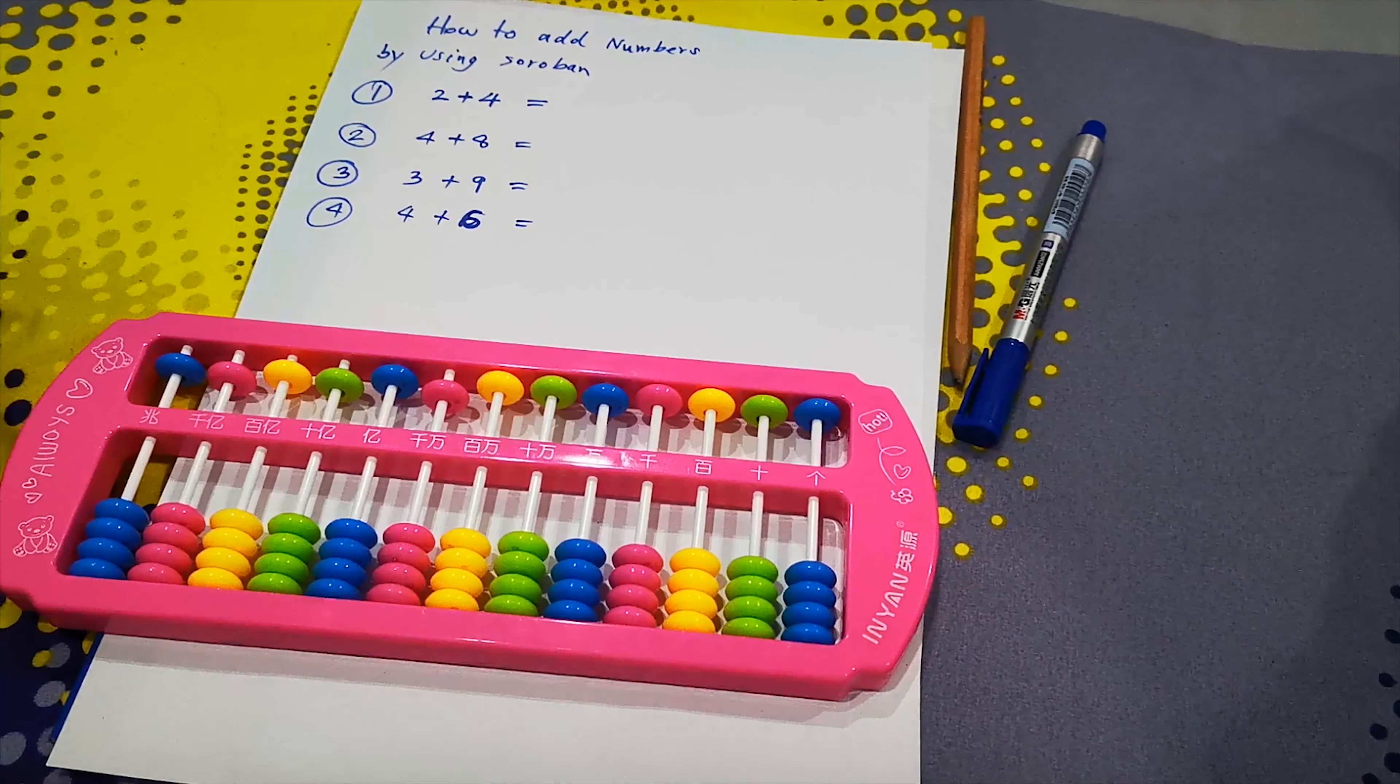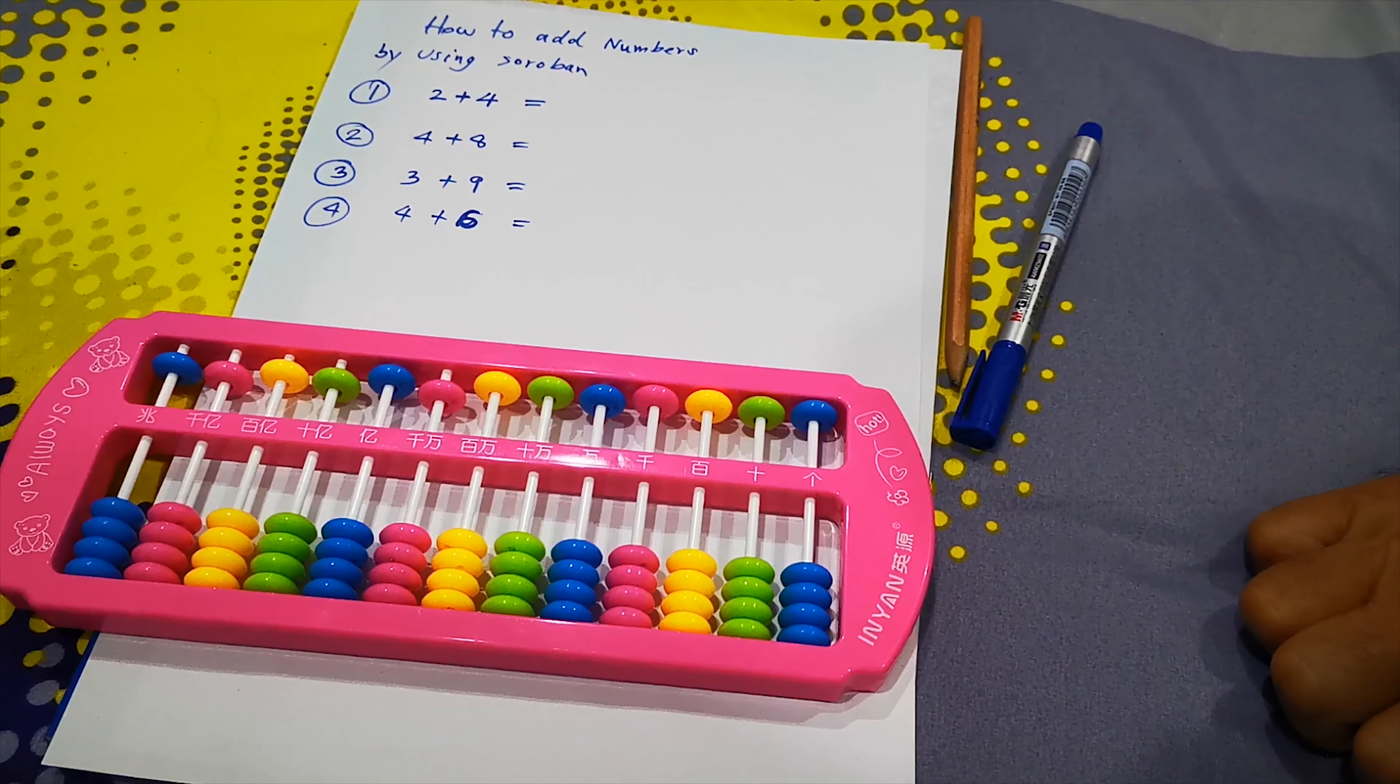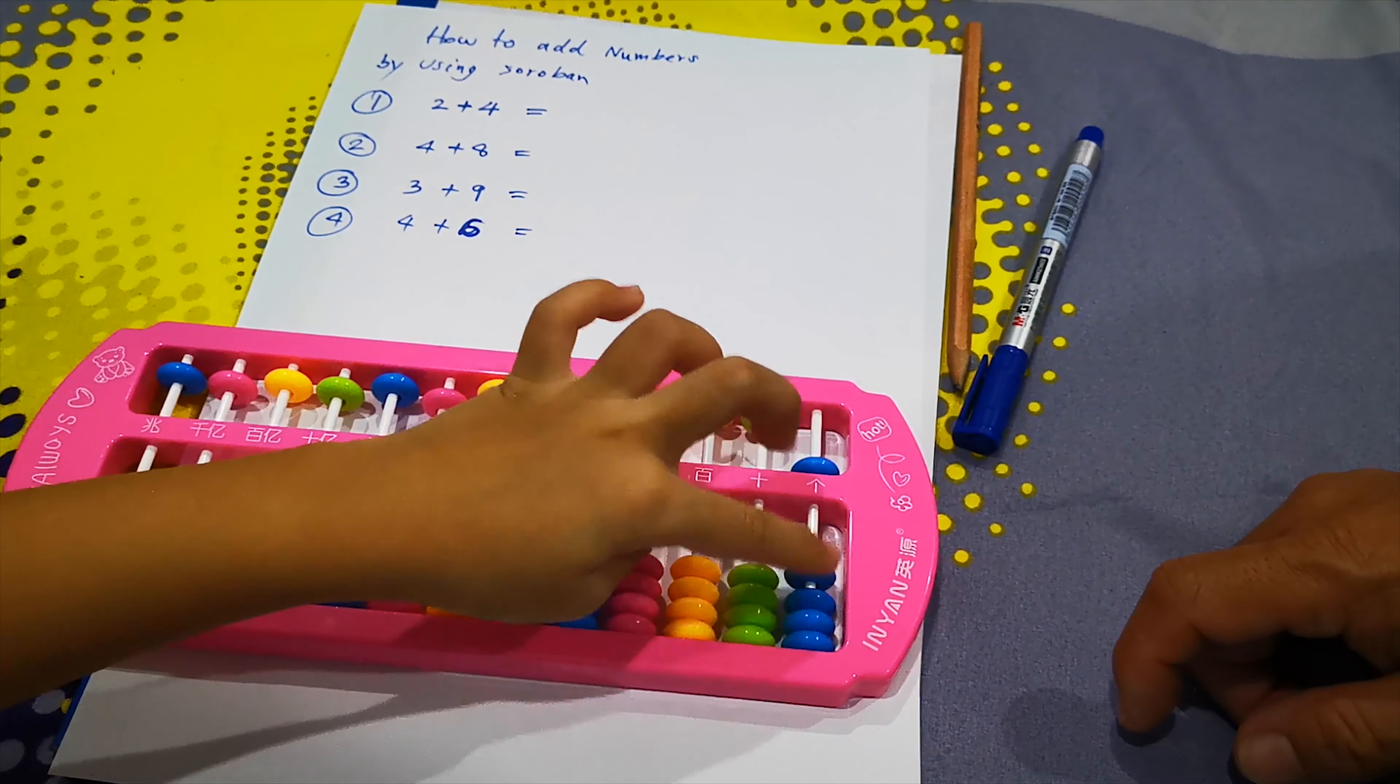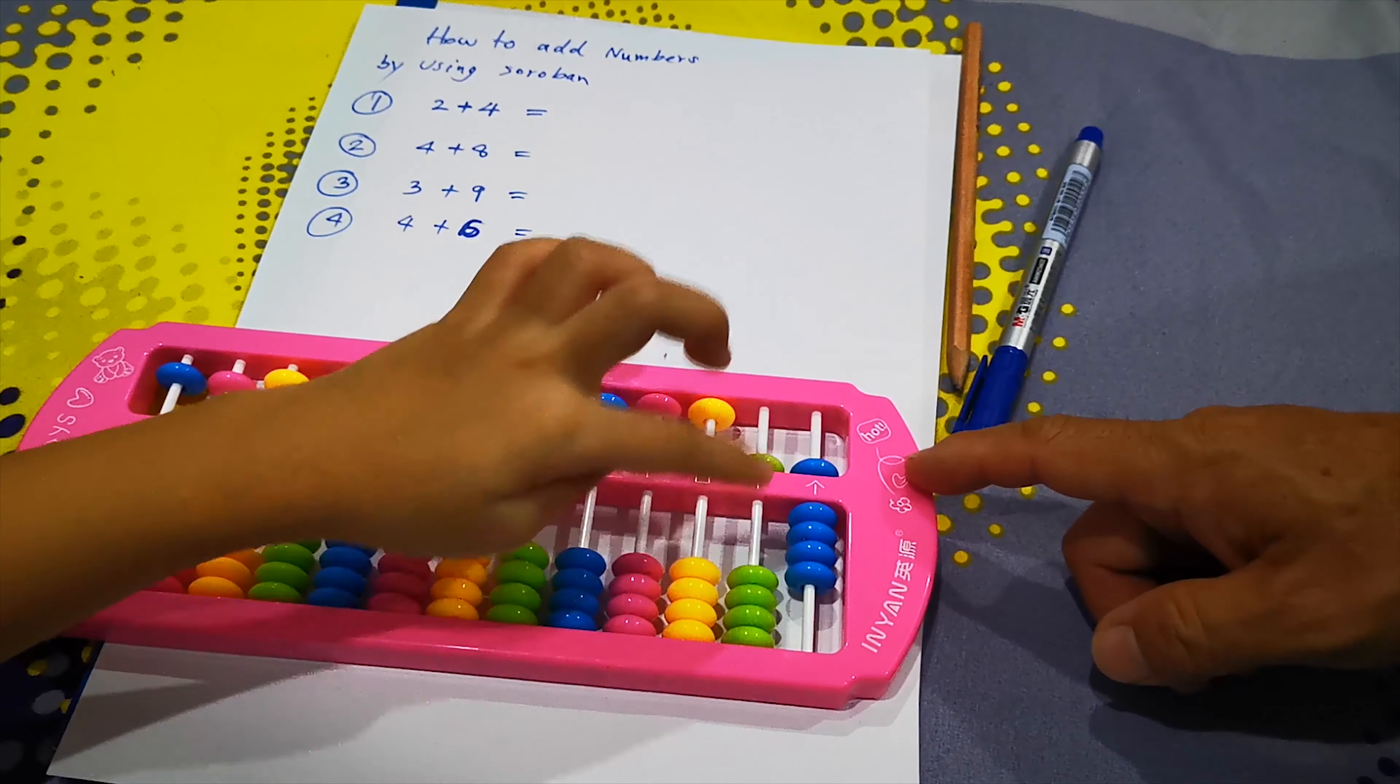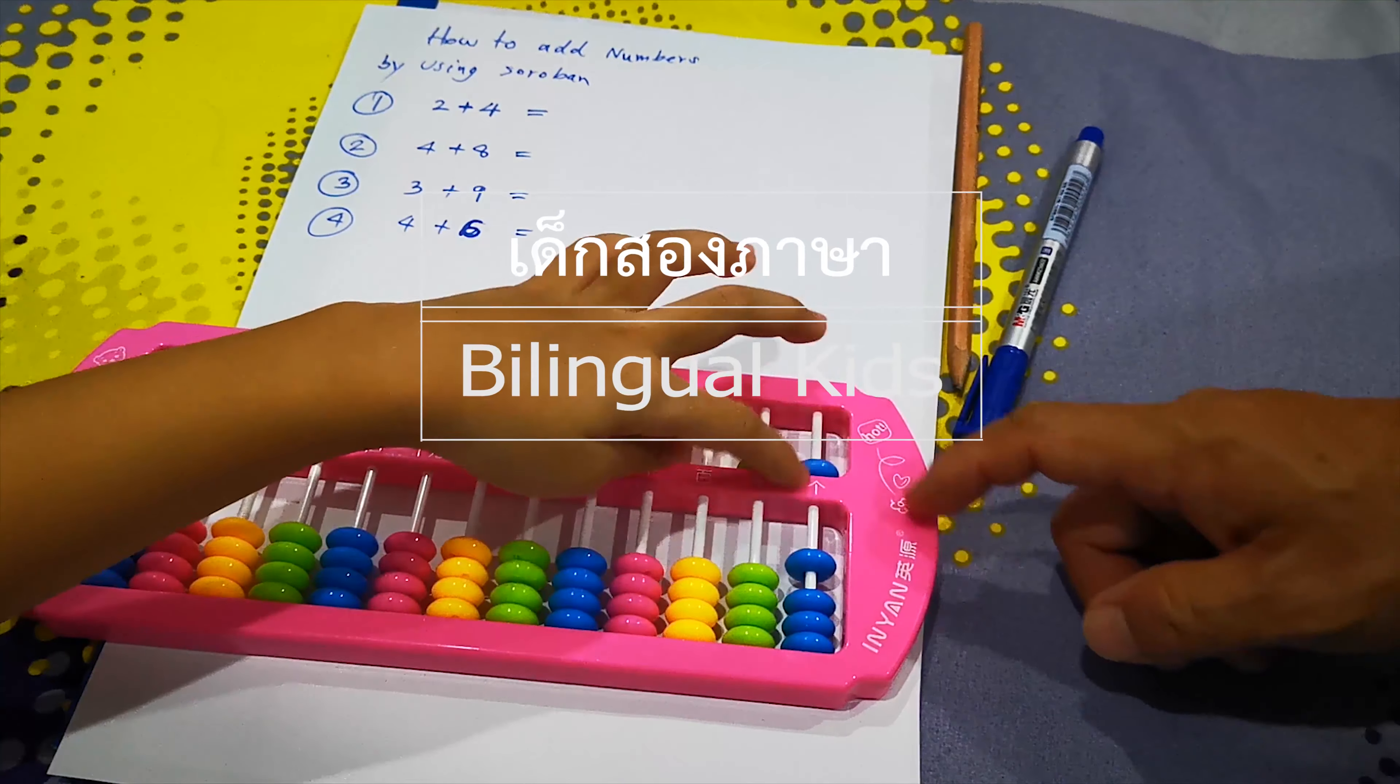Hi everyone, today I will show you how to add numbers by using silver band. This is 5, this is 4, this is 15, 50, and this is 40. Okay, the basic.